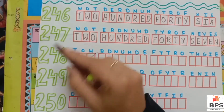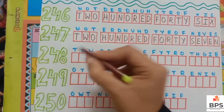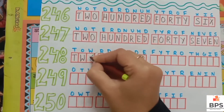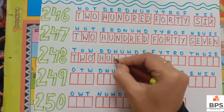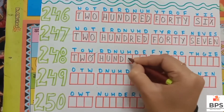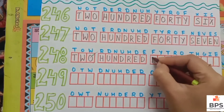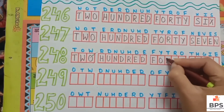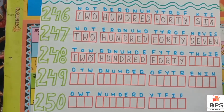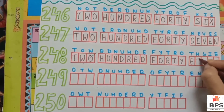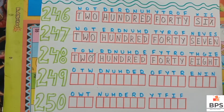Two hundred forty seven, two hundred forty eight — 248. T-W-O, 2; H-U-N-D-R-E-D, 100; F-O-R-T-Y, 40; E-I-G-H-T, 8. Two hundred forty eight — 248.